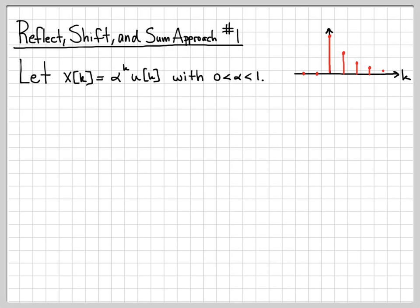So if we plotted x[k], it would look something like this. It's essentially this decaying exponential. It turns on at time 0 and then decays as you go to the right.